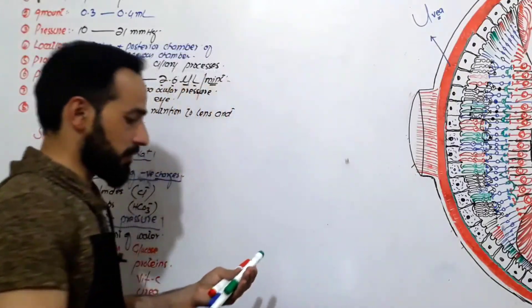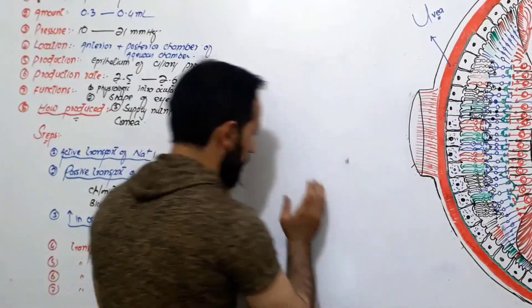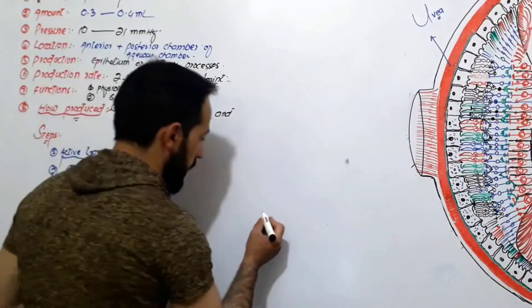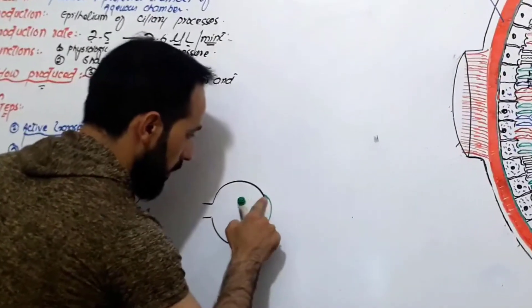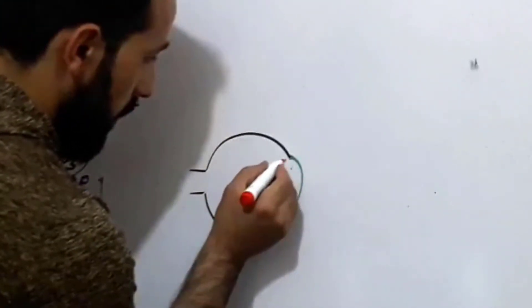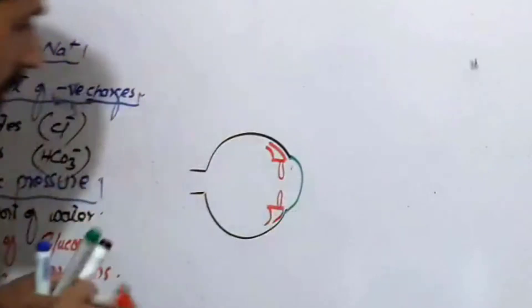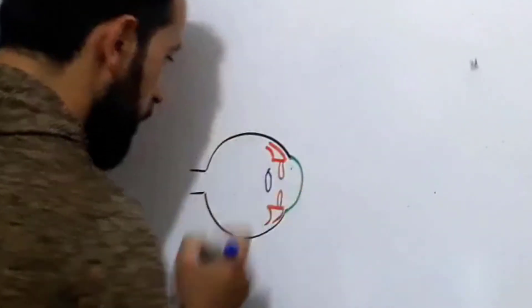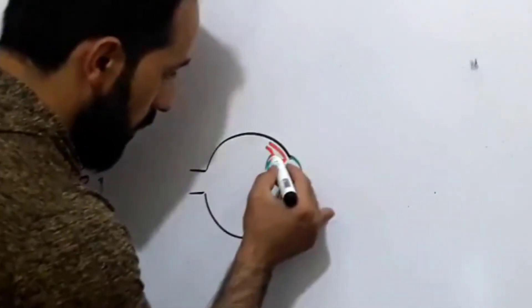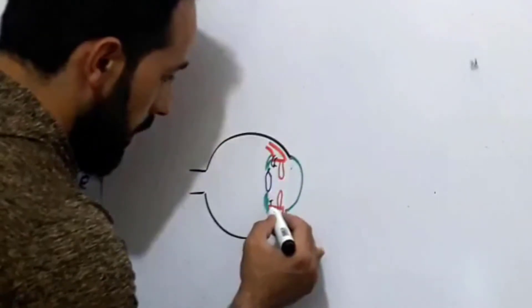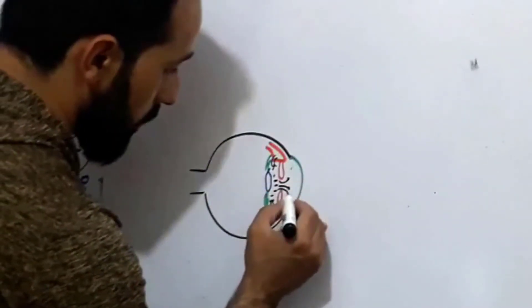Let's discuss the drainage of the aqueous humor. I will make a small diagram first, then we will enlarge that part and discuss the drainage. If this is your eye, there is your cornea, and behind it there is your ciliary body. This is your iris, and here you have your lens suspended by the zonules of Zinn or suspensory ligaments. The aqueous humor is produced by the ciliary epithelium of the ciliary processes and goes towards the anterior chamber.